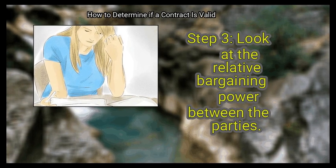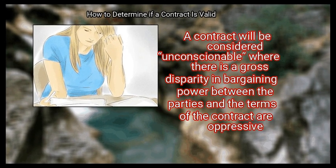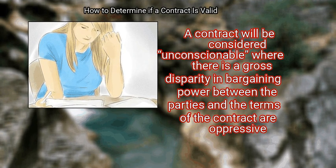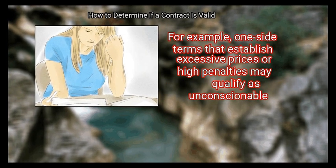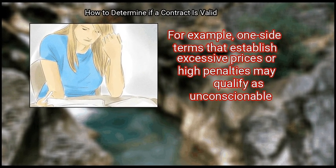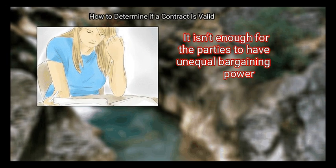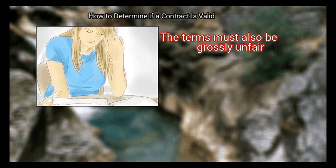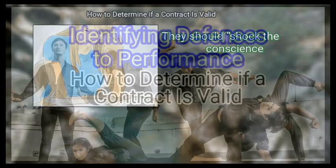Finally, look at the relative bargaining power between the parties. A contract will be considered unconscionable where there is a gross disparity in bargaining power between the parties and the terms of the contract are oppressive. For example, one-sided terms that establish excessive prices or high penalties may qualify as unconscionable. It isn't enough for the parties to have unequal bargaining power — the terms must also be grossly unfair; they should shock the conscience.